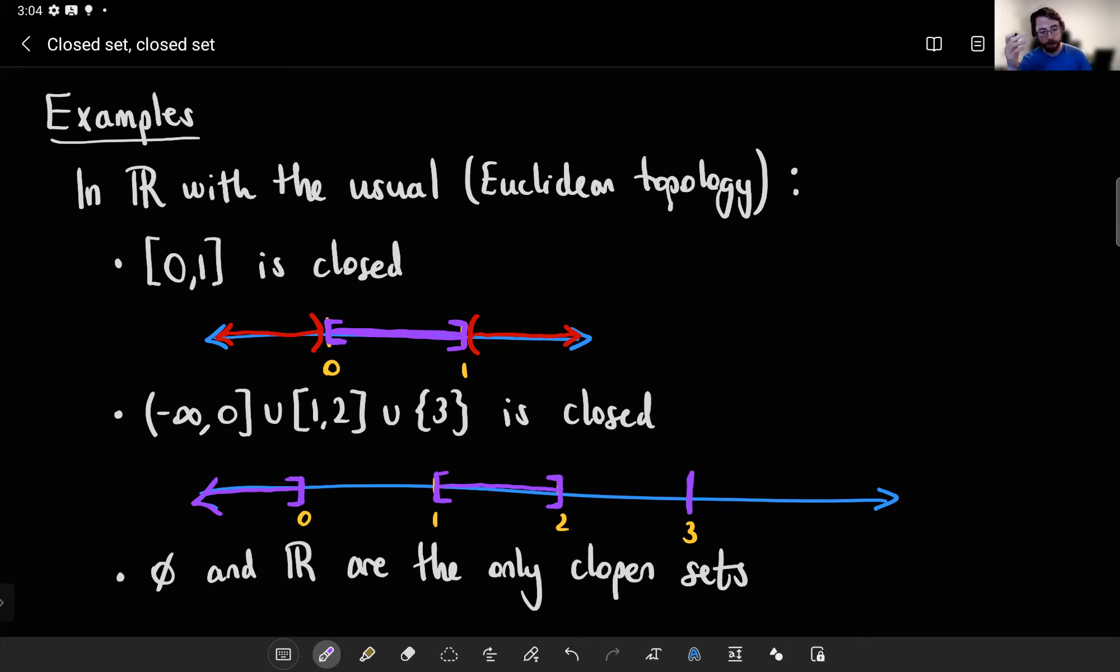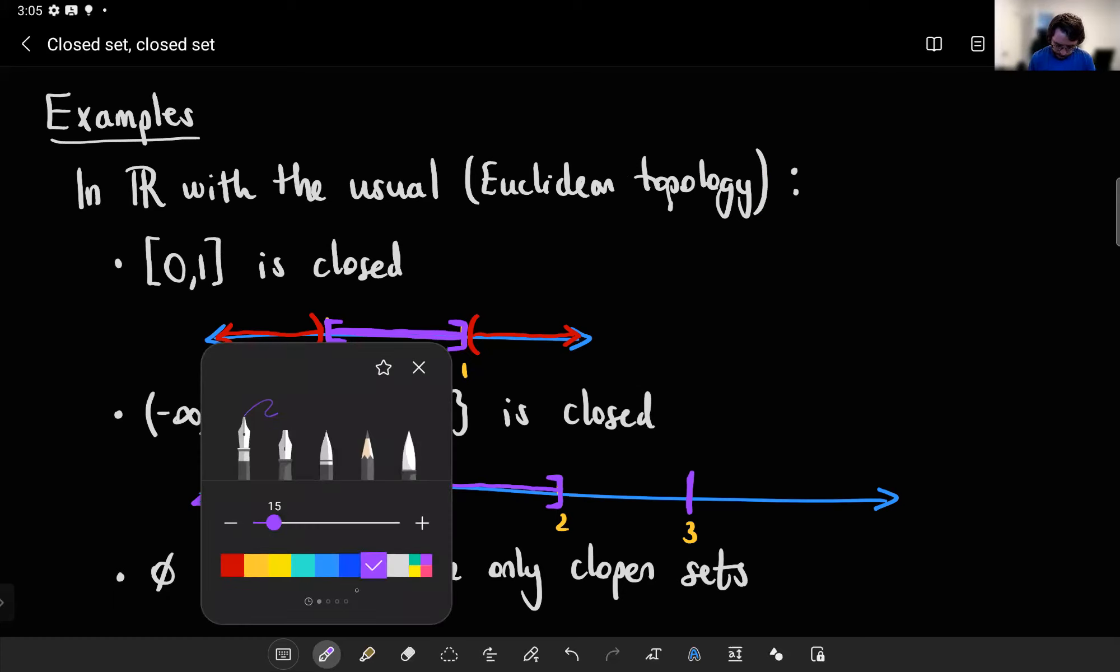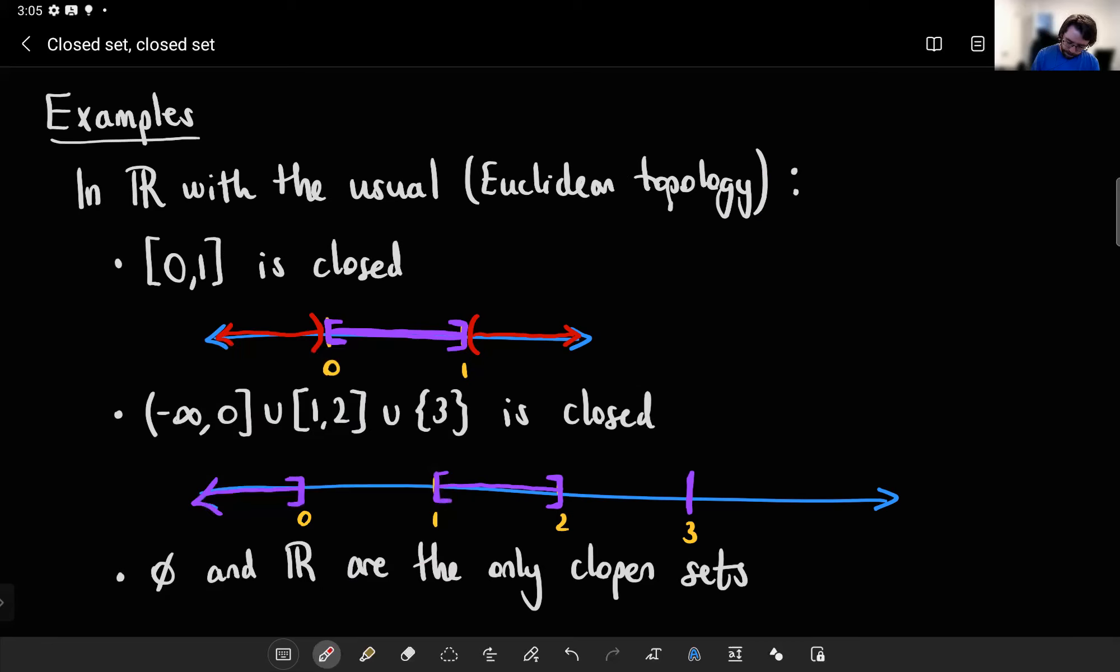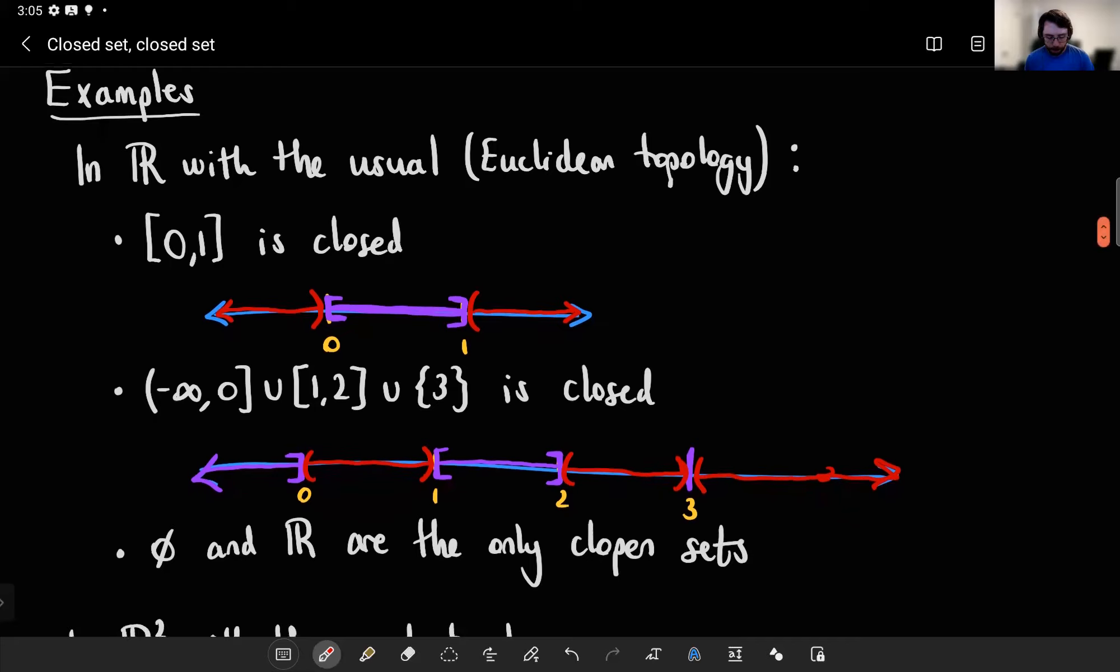And sure enough, according to your definition from real analysis, you know this should be closed in that it contains all its limit points. But the much nicer definition in topology just says all you really have to do is check that the complement is a whole bunch of open intervals. And sure enough, those three red sets are open sets in Euclidean topology.